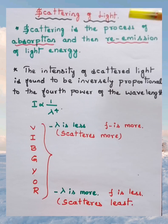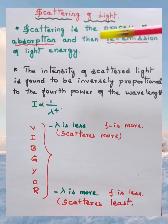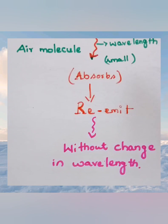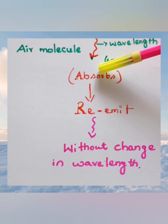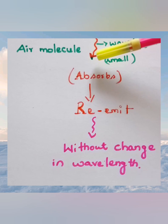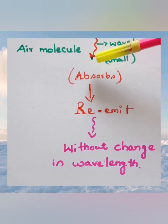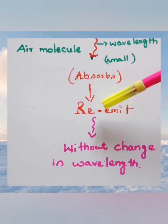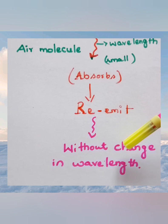The definition of scattering of light: scattering is the process of absorption and then reemission of light energy. Remember the keywords: absorption and reemission. As sunlight enters the atmosphere, air molecules whose size is smaller than the wavelength of incident light will absorb the incident light and then reemit it without change in its wavelength. This absorption and reemission of light energy is known as scattering of light.